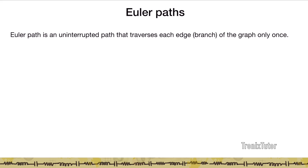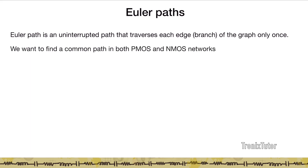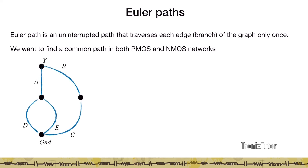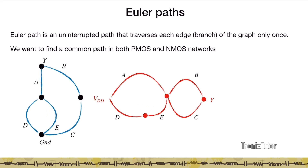We can use Euler paths from graph theory. An Euler path is an uninterrupted path that travels each edge of the graph only once. We want to find a common Euler path in both the PMOS and NMOS networks. If such a common path exists, we can create a much more compact stick diagram for this gate.